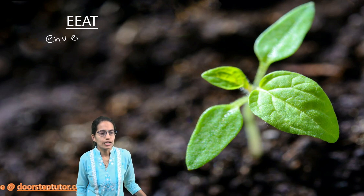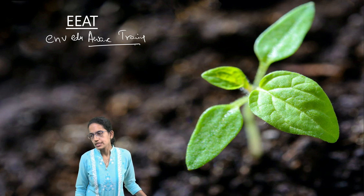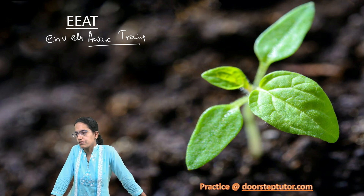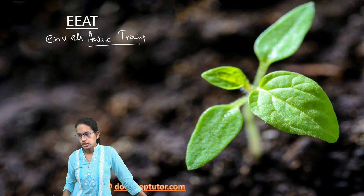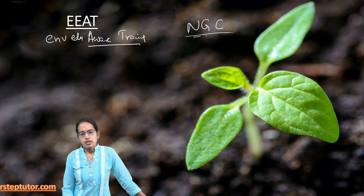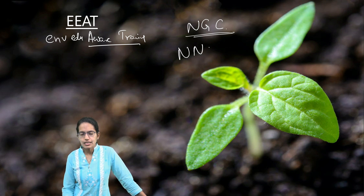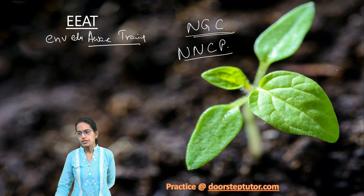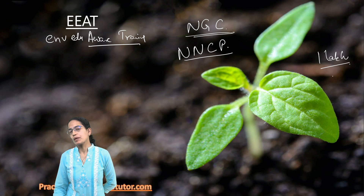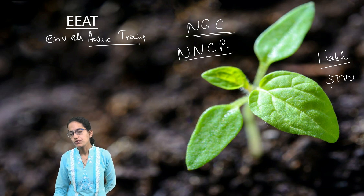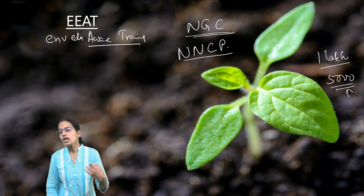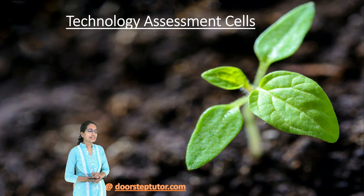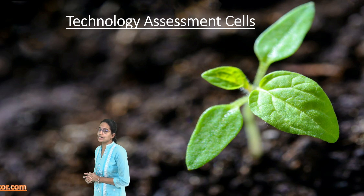The next is EEAT — Environment Education Awareness and Training. This is a centrally sponsored scheme by the Ministry of Environment, Forest and Climate Change. It promotes environmental awareness and student participation in conservation through programs like the National Green Corps, National Nature Camping Programs, and eco clubs. More than one lakh eco clubs have been established, with financial assistance of Rs. 5,000 per eco club given to schools.